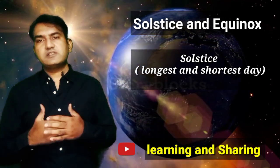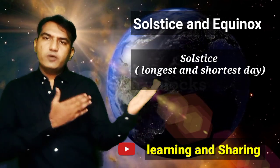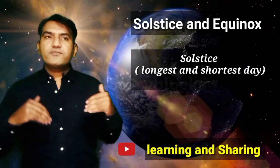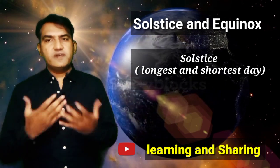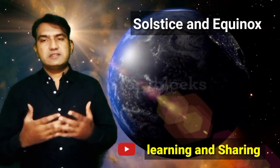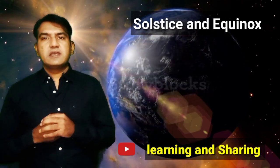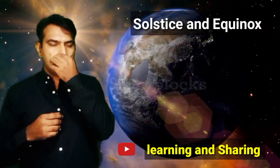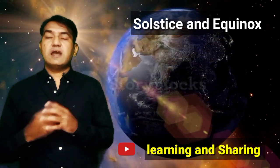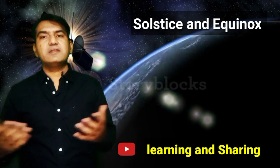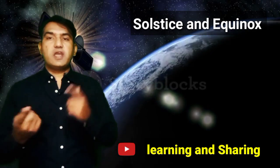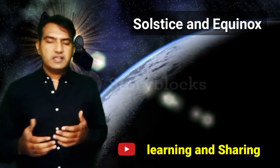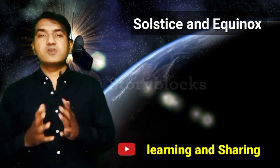Solstice also happens twice a year. One is called summer solstice and another is called the winter solstice. Before going to the solstice, let me add one more point. The 20th or 21st March equinox is called the vernal equinox — it marks the beginning of the spring season. The September equinox marks the start of the autumn season.